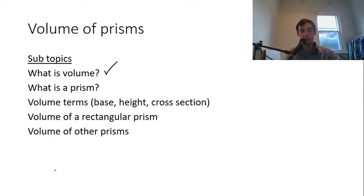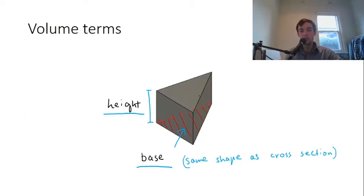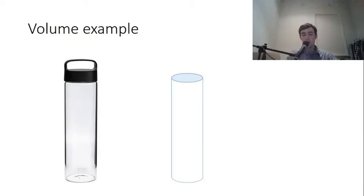So hopefully you know what a prism is. It's a 2D shape that's stretched out and hopefully you know what the base, the height, and the cross section are. Just to revise, there's a base and the height and the cross section is the same shape as the base.